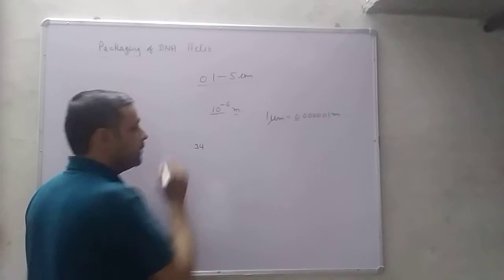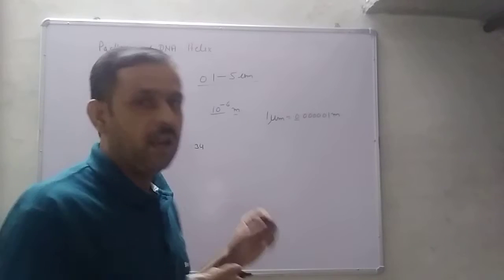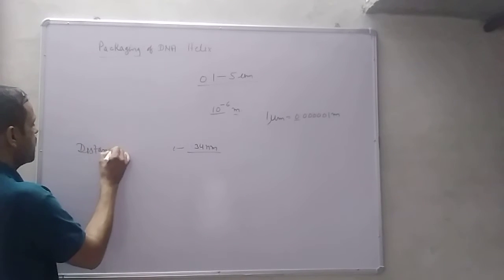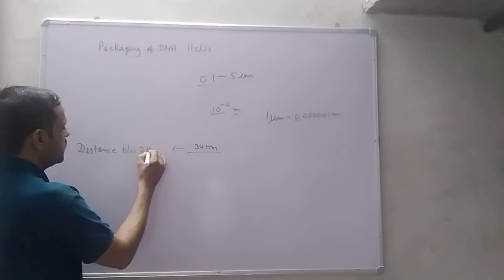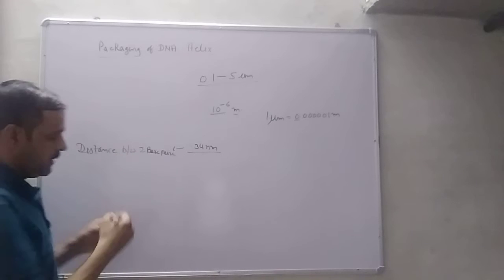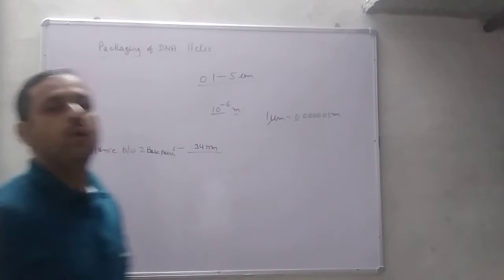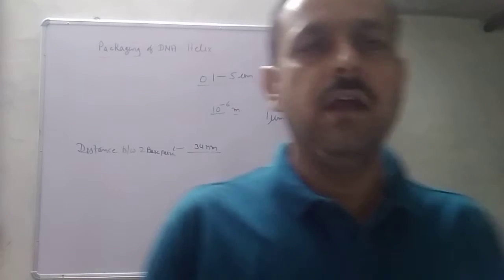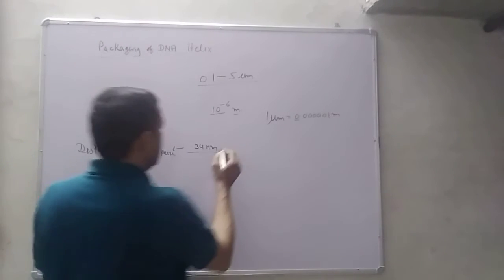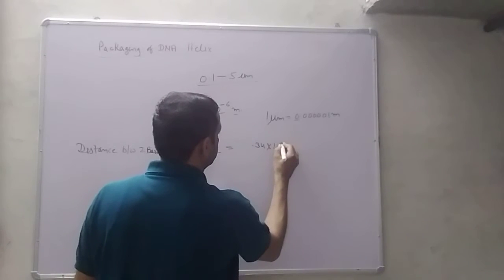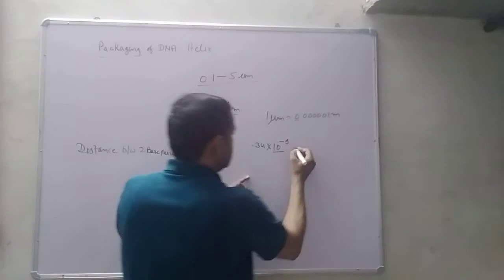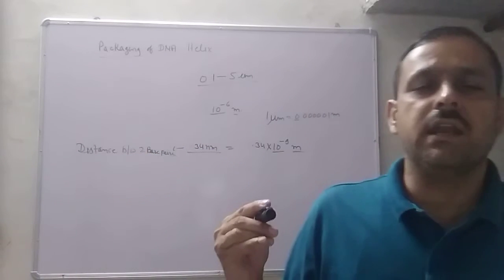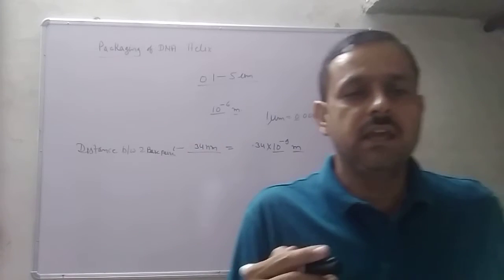यह अपने DNA की structure में पढ़ा था - 0.34 nanometer या nm, यह distance between two base pairs है। दो base pair के बीच में distance 0.34 nanometer है, और we can say 0.34 × 10 to the power minus 9 meter. अब अगर आपने देखें कि how many base pairs are present in the DNA।